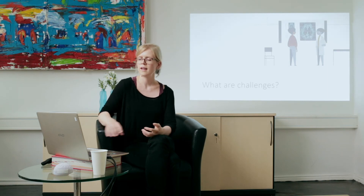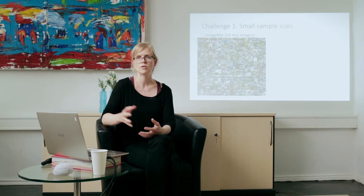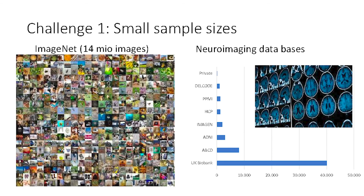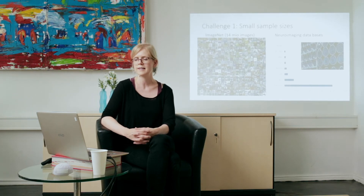To give you an impression of what we're looking at in those images, here is an example from Alzheimer's disease. You see two coronal slices — one from an Alzheimer's patient and one from a healthy control. You might think for yourself which image belongs to the patient and which to the control. The solution is that the image on the right is the patient with Alzheimer's disease. Alzheimer's is characterized by neurodegeneration, clearly visible in T1-weighted images: enlarged ventricles, cortical atrophy, and hippocampal atrophy.